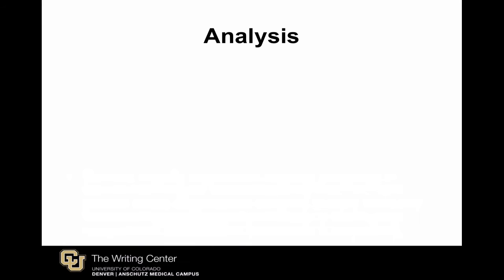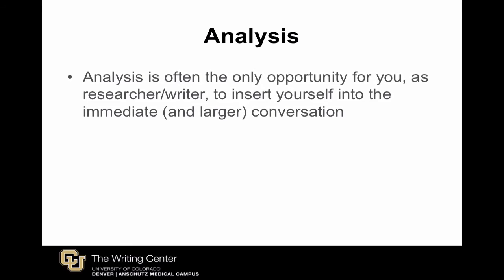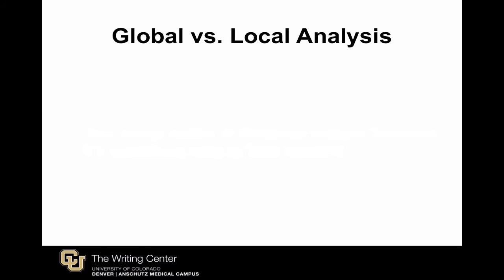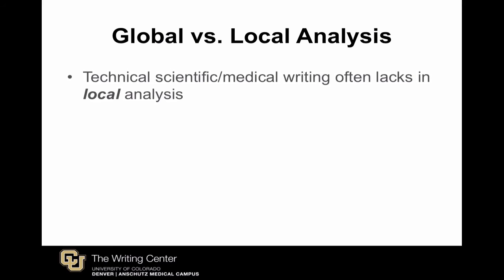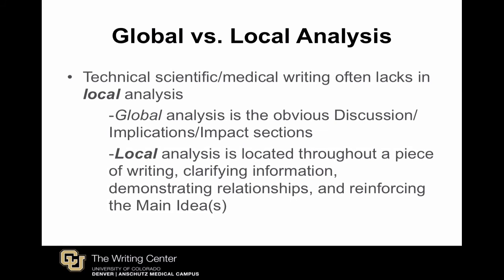Analysis answers the following questions from critical readers: So what? Who cares? What's new? How's it all related? Analysis is often your only opportunity as the writer to insert yourself in the conversation by explaining why what you've done or what you think is important. Analysis is also like an insurance policy for ensuring that readers don't interpret your evidence in ways you don't want them to — it allows you to control the message in the minds of readers. It may be useful to think about analysis as being both global and local. Global analysis typically occurs in obvious required places such as discussion, implications, or interpretation sections. However, what scientific writing often lacks is enough local analysis, which needs to occur at the paragraph and sentence level, clarifying relationships and reinforcing the main ideas of the text.